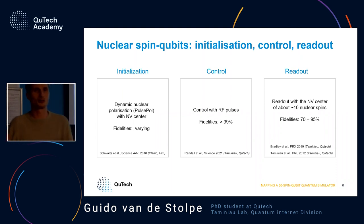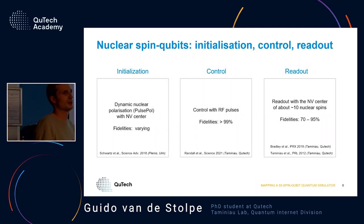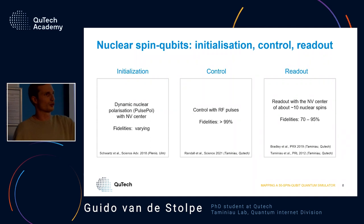To use these nuclear spins as a quantum simulator, we need to be able to do three things: initialization, control, and readout of the spins.